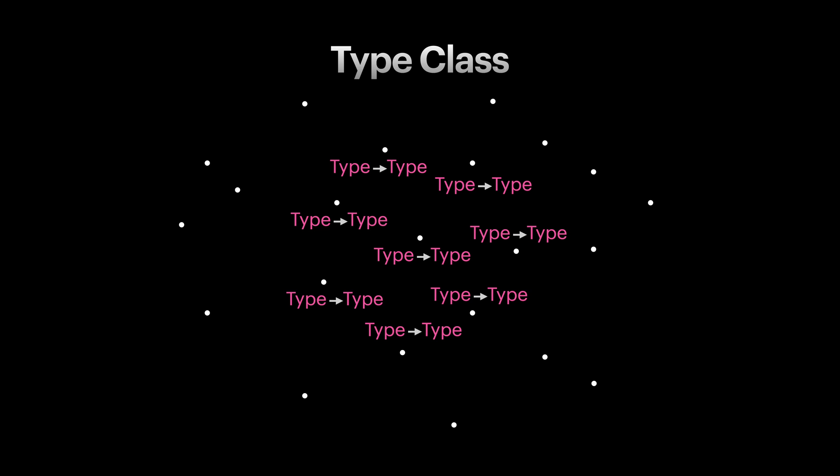Some examples of such type constructors can be these ones. Don't worry if some of these are new to you. We will cover them in future videos. But just to have a quick look on these. List and array, as you know, wraps multiple values of the same type. Tree is similar to list, but for modeling tree structures.